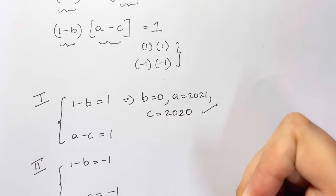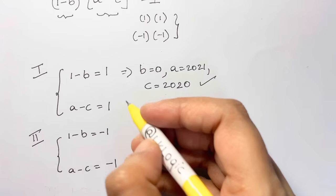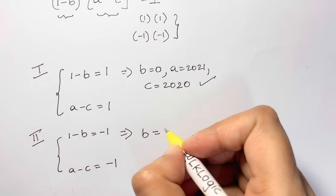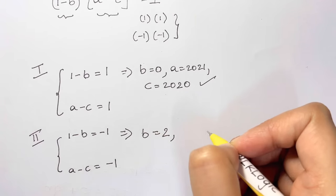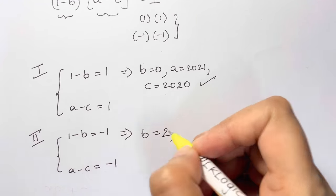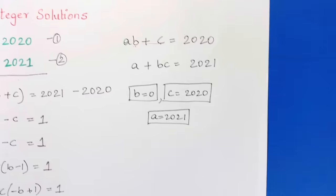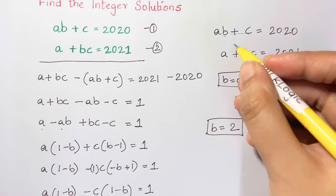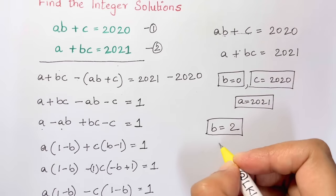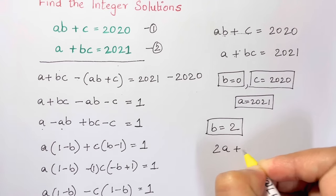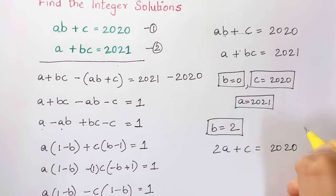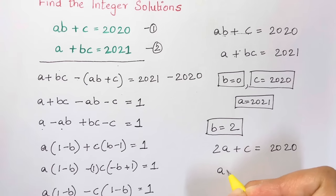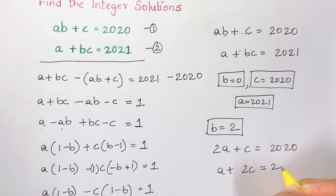For Case 2: from (1 minus b) = negative 1, we get b = 2. Substituting b = 2 into the equations: the first equation gives 2a + c = 2020, and the second gives a + 2c = 2021.